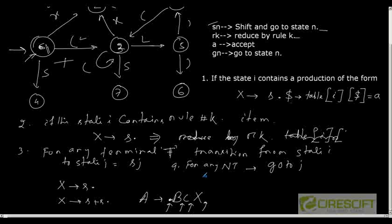In the last class we have seen how we can create a LR0 parse table using the concept of a deterministic finite automata. First we created a DFA where every state represents what we call as a set of LR0 items. A LR0 item is nothing but a production of the grammar with a demarcator represented as a dot, and it can sit anywhere in the RHS of the production.